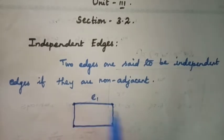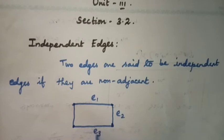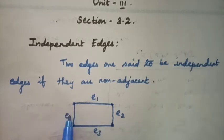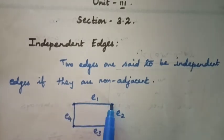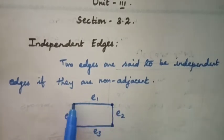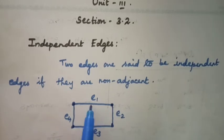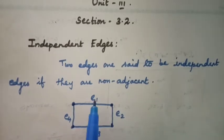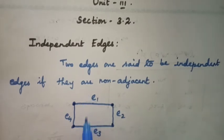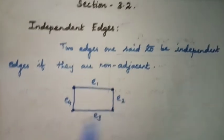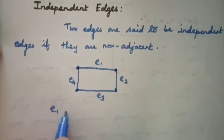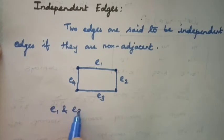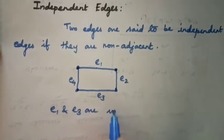In the graph there are four edges. E1 and E2 are adjacent, E1 and E4 are adjacent, but E1 is not adjacent with E3. So, E1 and E3 are independent edges.